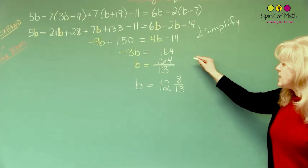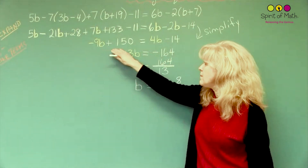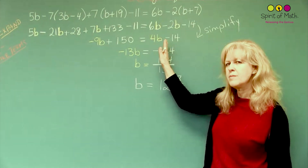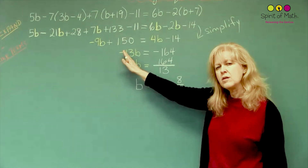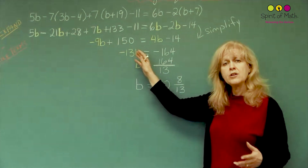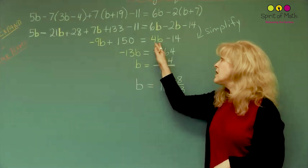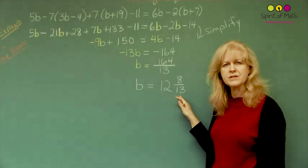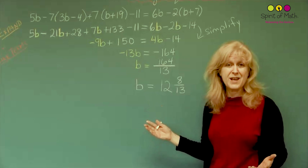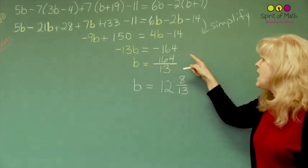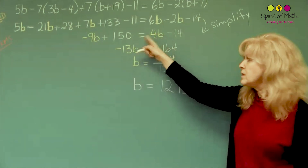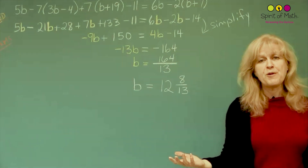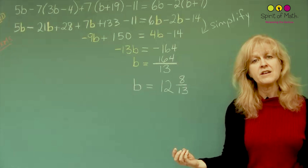From there, what you want to do is notice that you've got a number with a b and a number without a b on each side. You want to put all the numbers with variables on the left side — or one side, it doesn't matter which. I always like to put the variable on the left side because it's easier to read b equals something. So we're isolating the b's on one side and putting all the numbers on the other side. That's where you use transposition, same as in the last video.